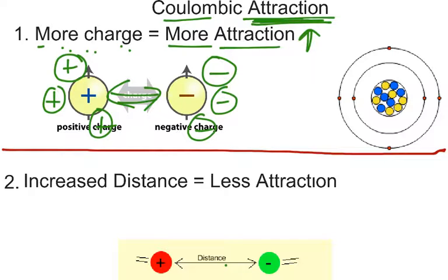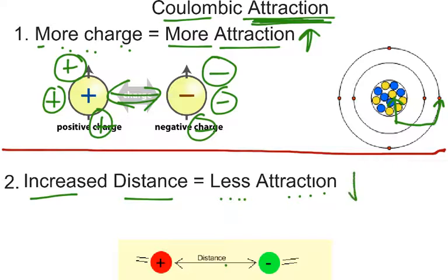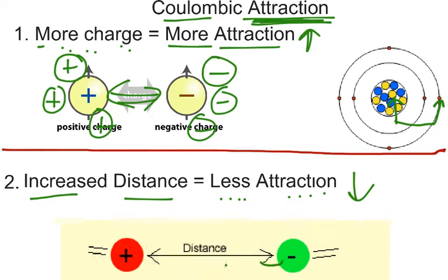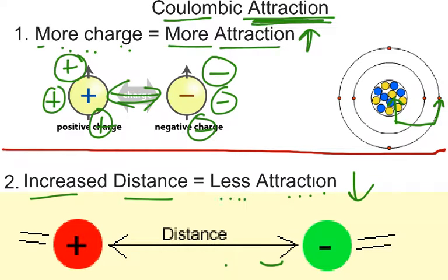Remember, the attraction we keep talking about in terms of the structure of the atom is in relation to the protons and the nucleus and the valence electrons. Also, in coulombic attraction, it says that if we increase the distance, we will weaken the attraction. Simply put, if I increase the distance between these particles, the attraction between them will get weaker.